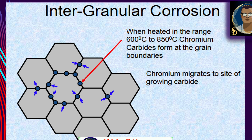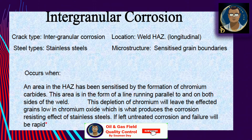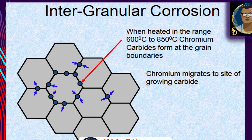Intergranular corrosion cracking occurs in the heat affected zone of stainless steels, with sensitized grain boundaries as the susceptible microstructure. It occurs when an area in the HAZ has been sensitized by the formation of chromium carbides, in a line running parallel to and on both sides of the weld. This depletion of chromium leaves the affected grains low in chromium oxide — which produces the corrosion resistance of stainless steel — and if left untreated, corrosion and failure will be very rapid. When heated in the range of 600–850°C, chromium carbides form at the grain boundaries as chromium migrates to the site of the growing carbide.